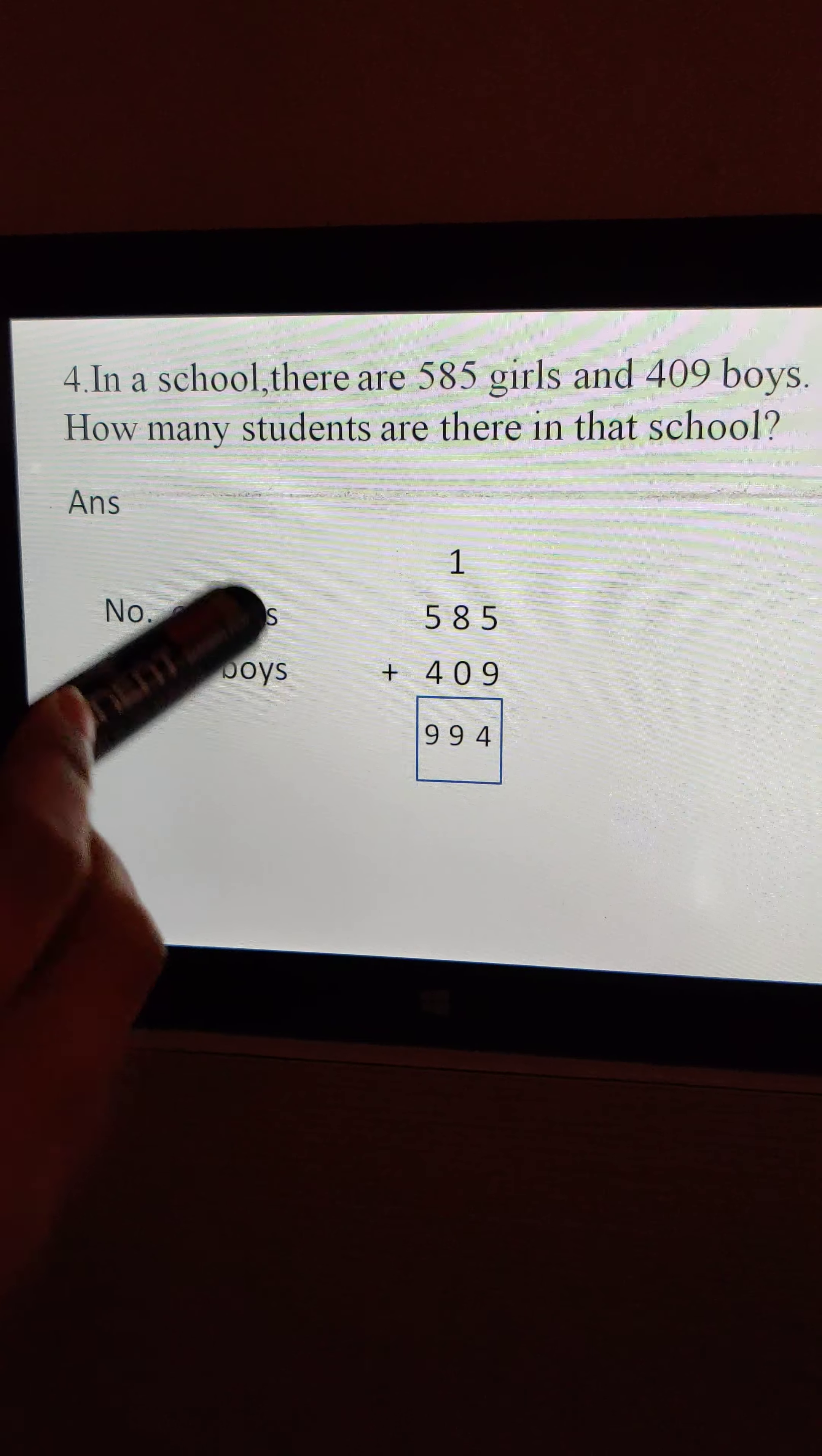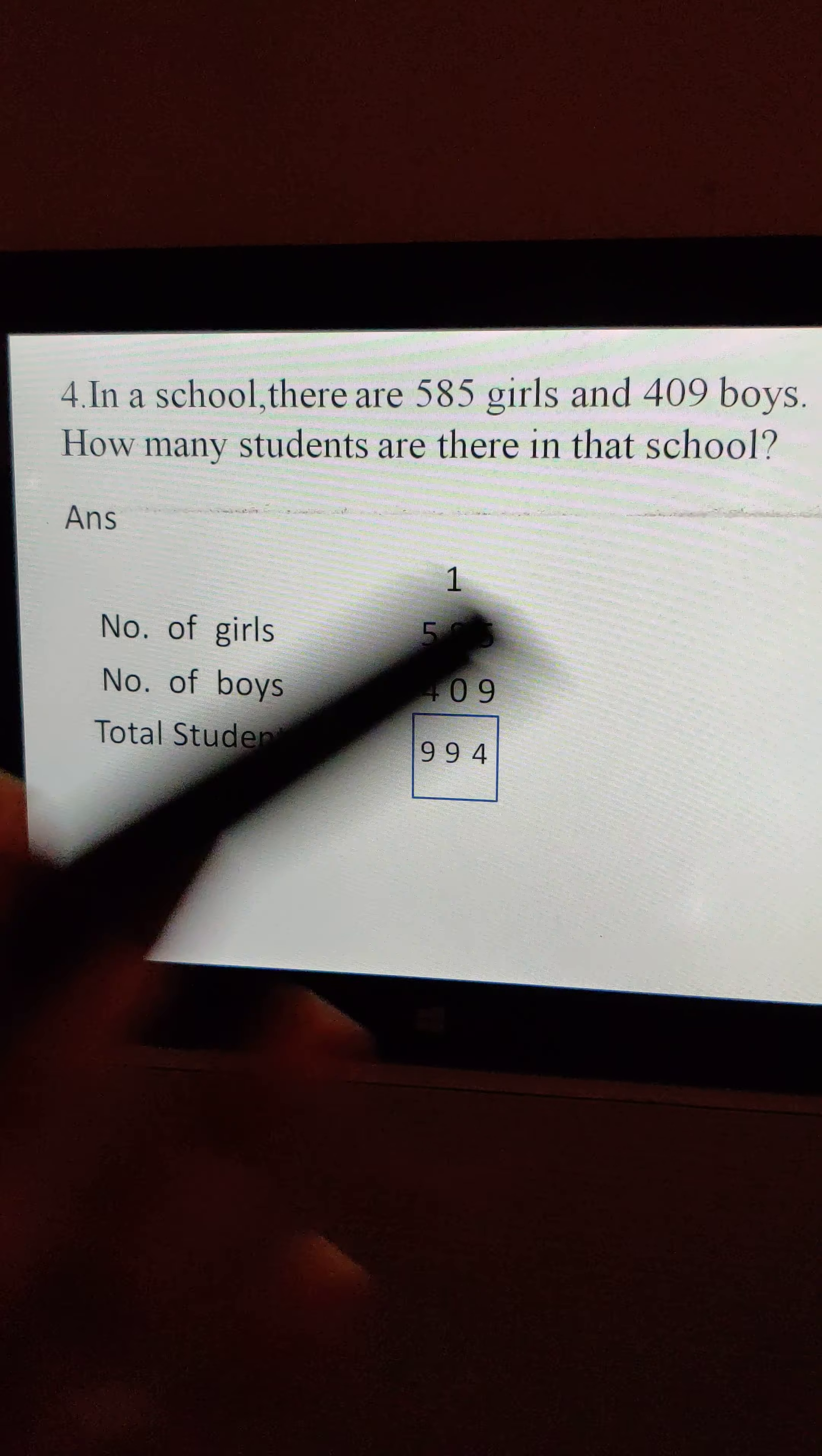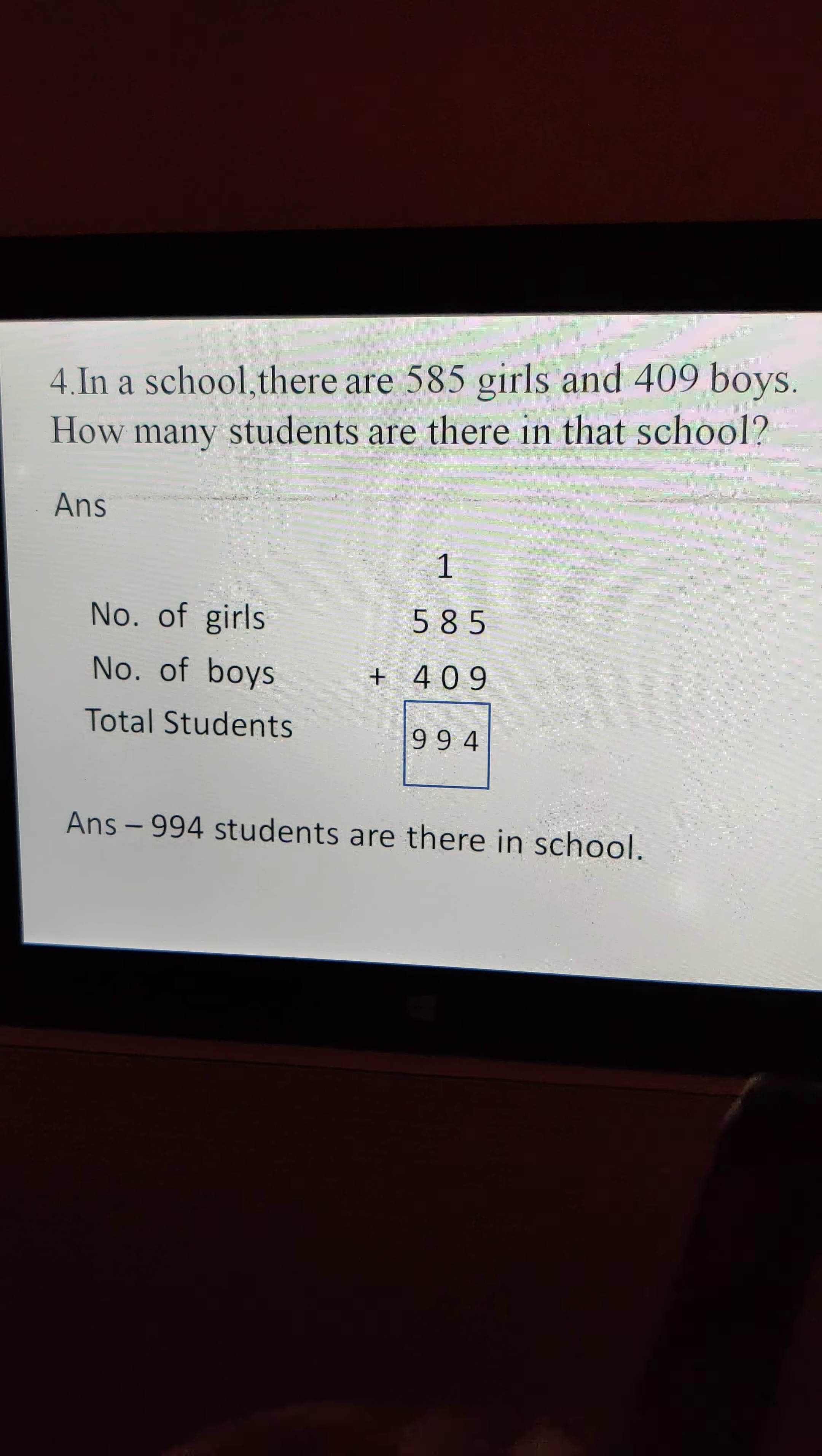So what is this? When we add number of girls with number of boys, what we had got? Yes, as total students. So if you people will get three digit numbers, don't get panic. These are also same like two digits only. So again we have to write the answer. 994 students are there in school.